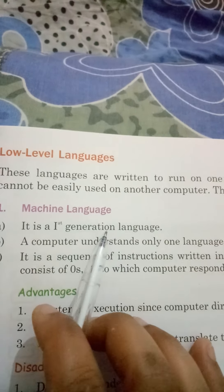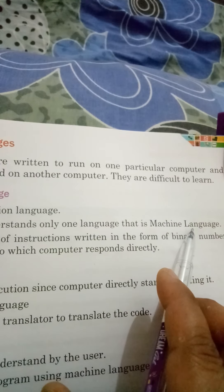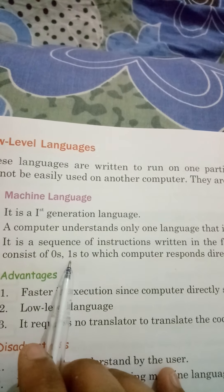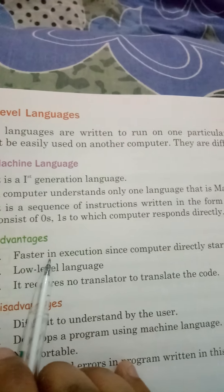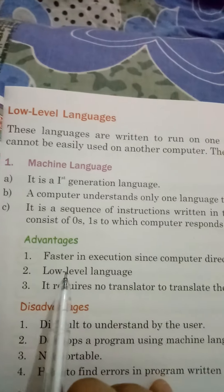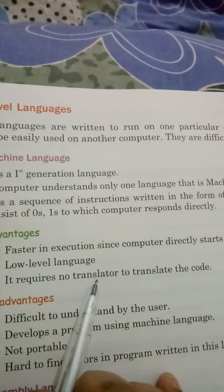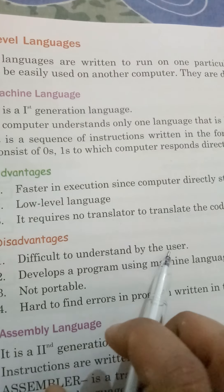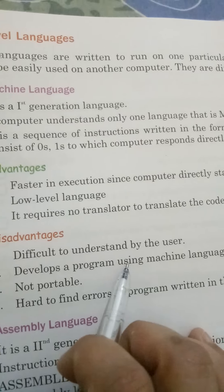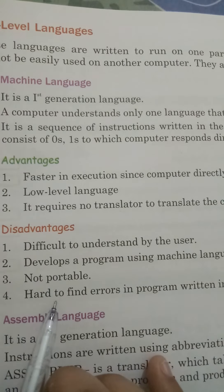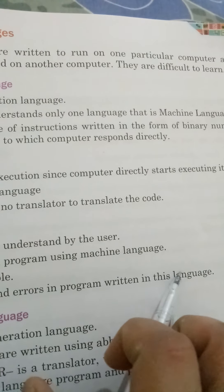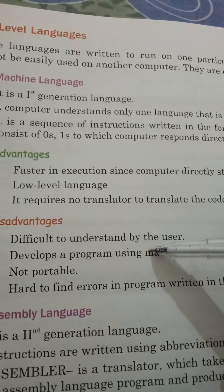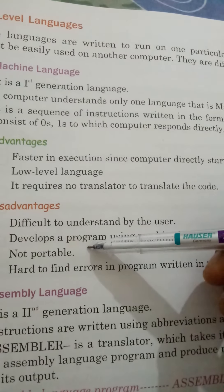In our last chapter we read about first-generation computers, which were large-scale computers. Machine language instructions are given in the form of zeros and ones. Its advantages are: faster in execution since the computer directly executes it; it requires no translator to translate the code. Disadvantages: difficult to understand by the user; hard to find errors in a program written in this language.